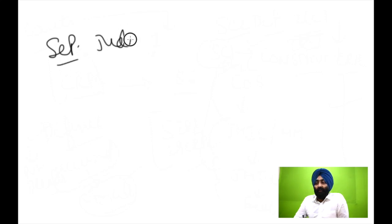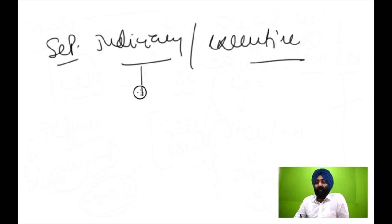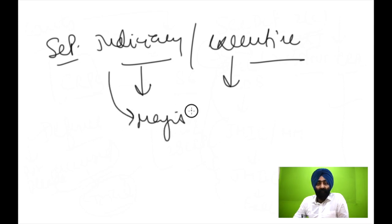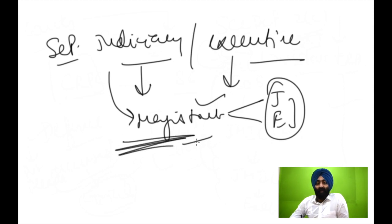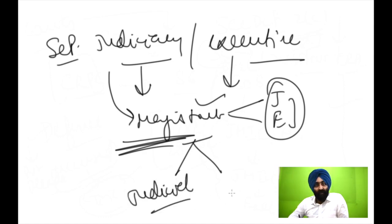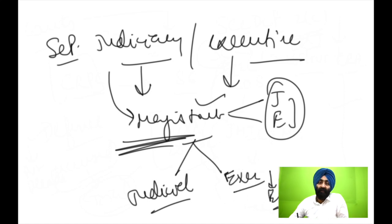Now I will talk about the separation of judiciary from the executive. The judicial functions are actually separate from executive functions. Previously, magistrates used to deal with both judicial and executive functions. But to prevent these things from getting mixed up, everything was divided — judicial functions would be exercised by the Judicial Magistrate, and executive functions would be dealt with by the Executive Magistrates.